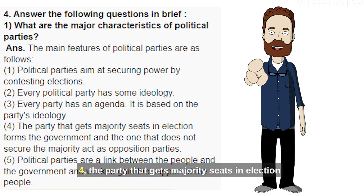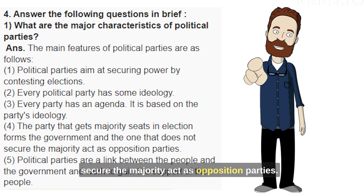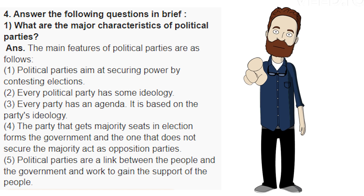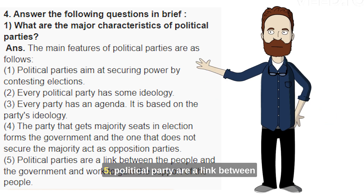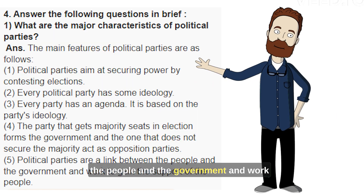4. The party that gets majority seats in an election forms the government, and the one that does not secure the majority acts as the opposition party. 5. Political parties are a link between the people and the government, and work to gain the support of the people.